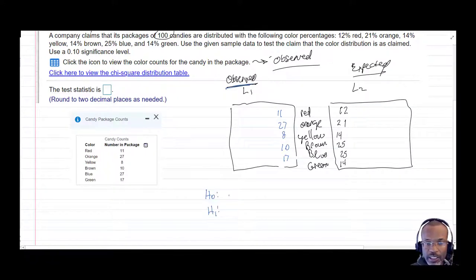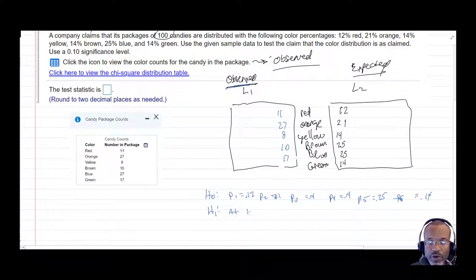On one hand, there are these proportions that are stated, proportion 1, proportion 2, 3, 4, 5, and 6. And the claim is that those are the proportions, the 0.12, the 0.21, and so forth. And the alternative of all of those proportions being as claimed is at least one of those is different, at least one of the above proportions is different than what was claimed.